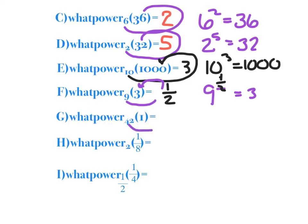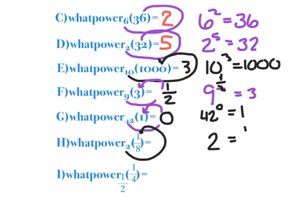42 to the what is 1. Well, that's kind of a nice one — anybody to what power is 1? I'm going to go with 0. 42 to the 0 is 1. What did you think about this one? 2 to the what power equals 1 eighth? Well, I know my exponent is definitely going to be negative because it's a fraction, and 2 cubed is 8, so I'm going to go with negative 3. And lastly, I've got 1 half to some power has to equal 1 fourth. I think all I did was square those numbers, so I'm going to go with a 2 here.